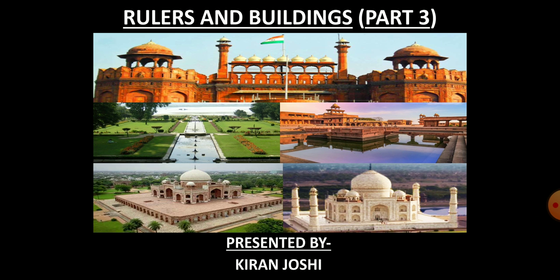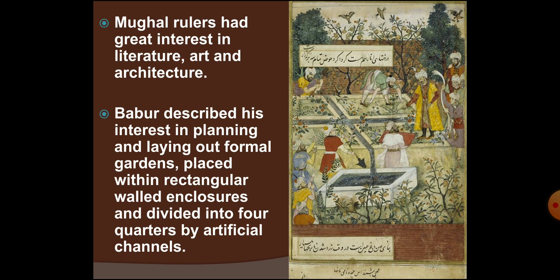In this video we will learn about the architecture used to construct gardens, tombs, and forts under the Mughals. The Mughal emperors, especially Shah Jahan, had great interest in literature, art, and architecture. For instance, Babur in his autobiography described his interest in the planning and laying out of formal gardens.